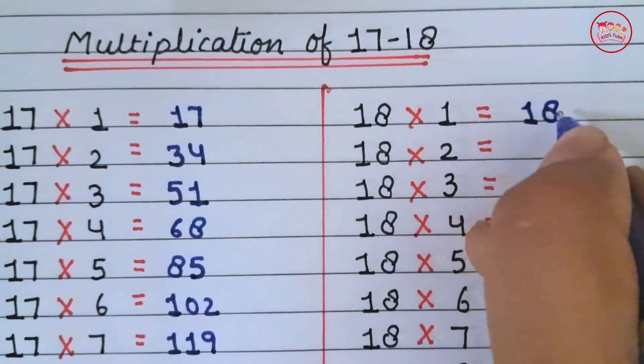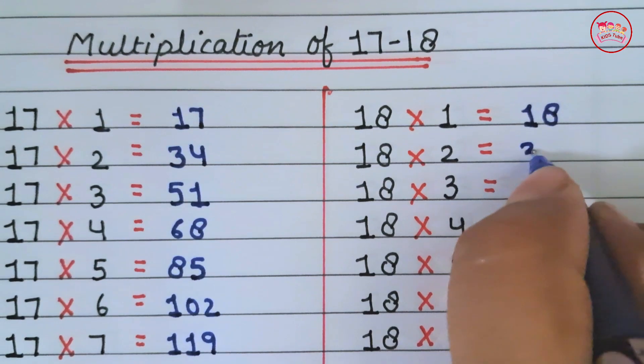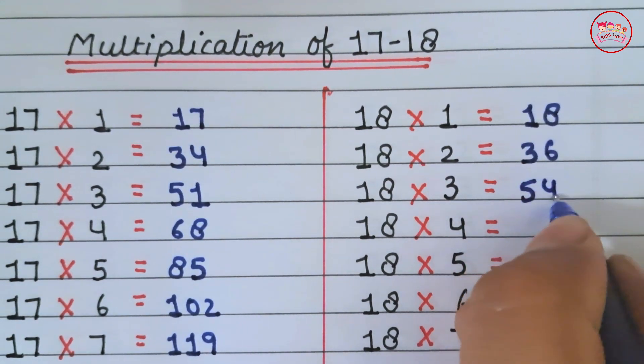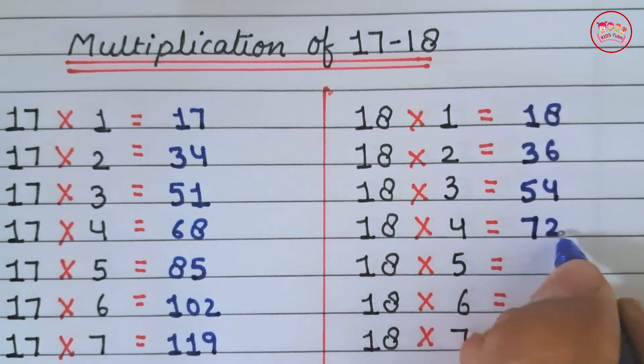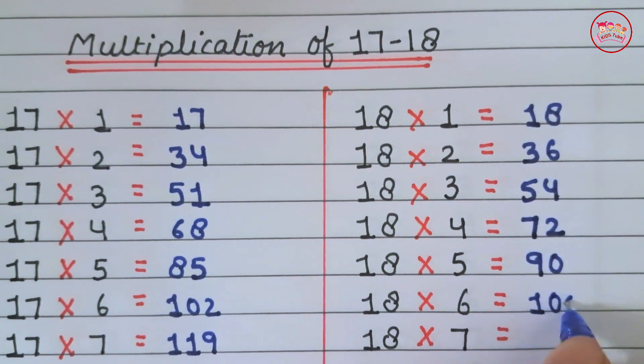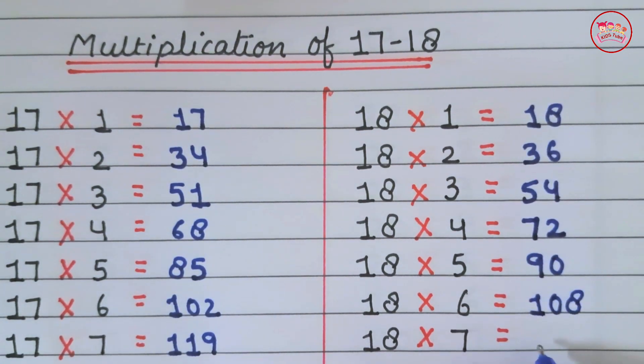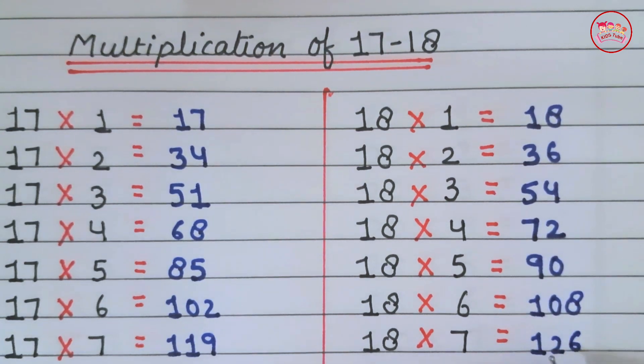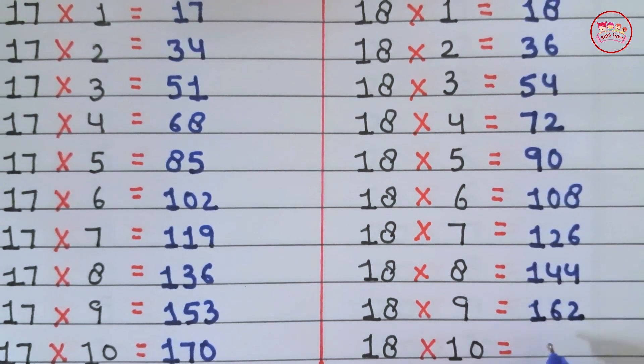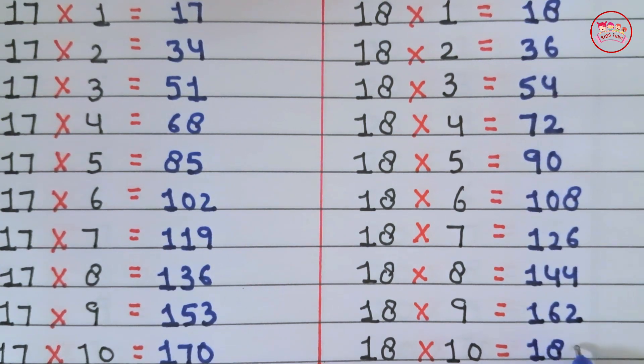18×1 is 18, 18×2 is 36, 18×3 is 54, 18×4 is 72, 18×5 is 90, 18×6 is 108, 18×7 is 126, 18×8 is 144, 18×9 is 162, 18×10 is 180.